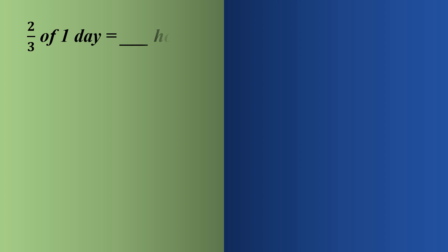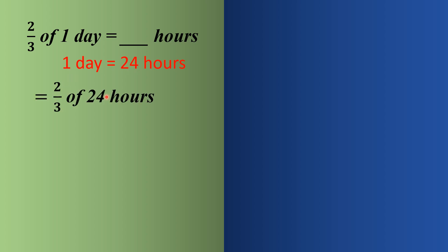Next question: 2/3 of 1 day equals how many hours? We need to find the 2/3rd part of one day. One day has 24 hours, so the question becomes 2/3 of 24 hours. We replace 'of' with a multiplication sign: 2/3 multiply 24 hours.